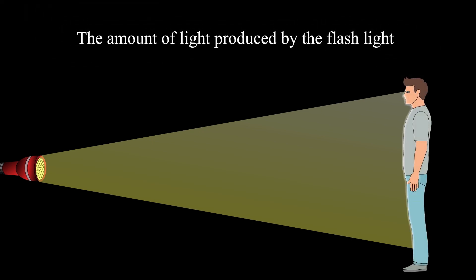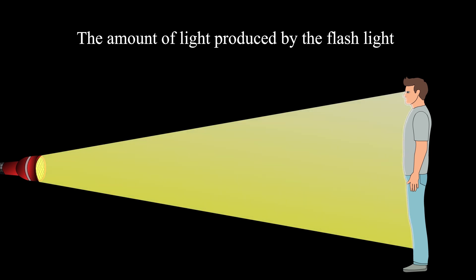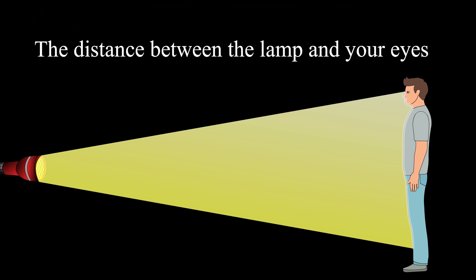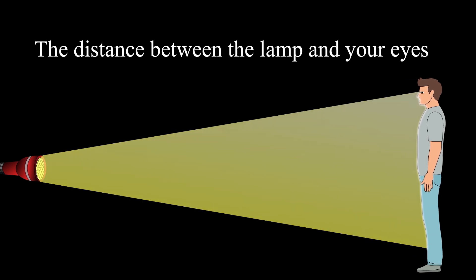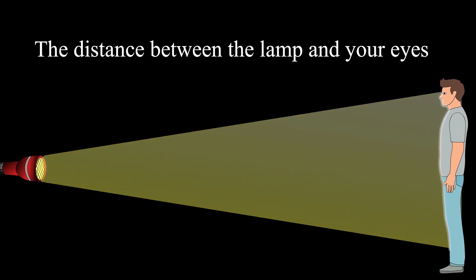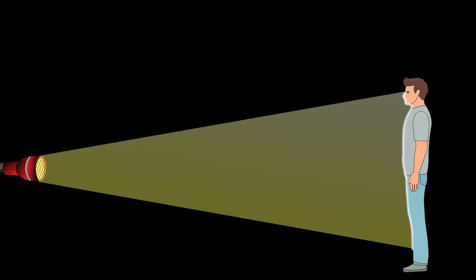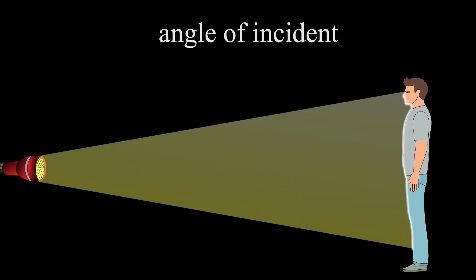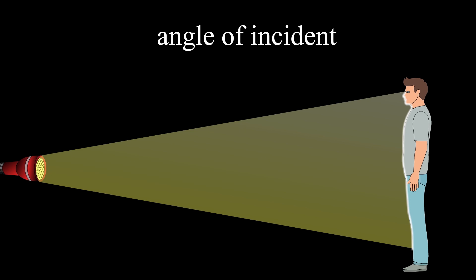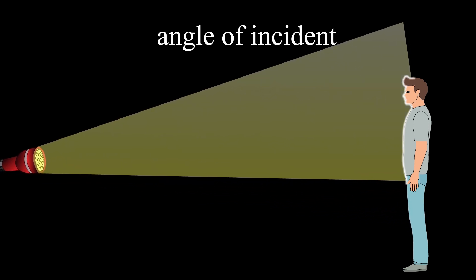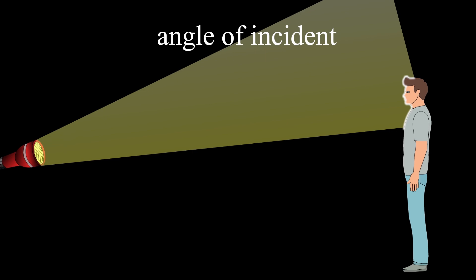First, the amount of light produced by the flashlight — the brighter the flashlight, the greater the amount of light that reaches you. Second, the distance between the lamp and your eyes — the greater the distance, the less light you receive. Third, the angle at which the light falls on your eyes — the more we shift the lamp away from you, the less light reaches you. Therefore, increasing the angle of incidence of light leads to reducing the amount of light that reaches you.